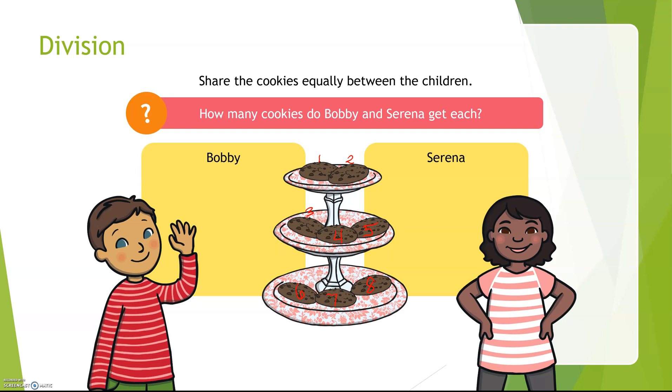Share the cookies equally between the children. How many cookies do Bobby and Serena get each?